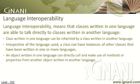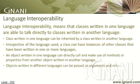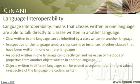I would also want you to notice that while VB.NET used integer as the variable type, C-Sharp, which does not have the integer variable type, used int as the data type. Objects written in different languages can be passed as arguments and return values, irrespective of the language the code is written in.